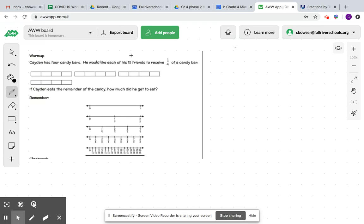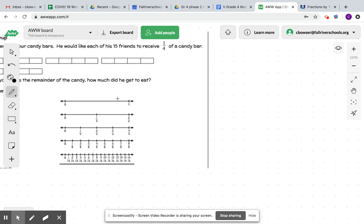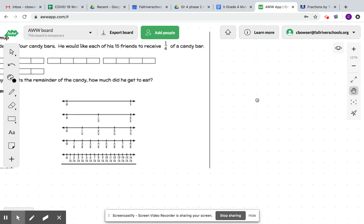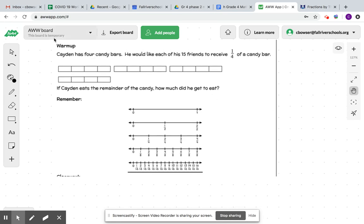So it says he would like each of his friends to receive one-fourth of a candy bar. So I'm going to go ahead and look at this candy bar and I'm going to see if I have 15 friends.